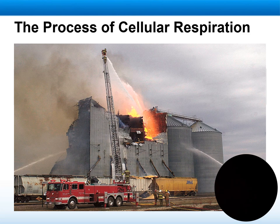And we, as heterotrophs, are consumers that need plants to help us get our food. Also, another important byproduct in the process of photosynthesis is oxygen. Plants help the atmosphere by maintaining the percentage of oxygen inside the atmosphere as a byproduct of photosynthesis.